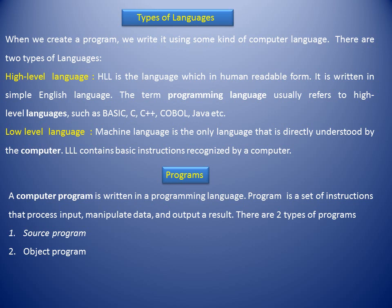A program written by a programmer in C++ or any other language is called a source program. If we take the example of C++, it will have a .cpp extension. When this program is translated into an object program or machine code, the extension given to that program is .obj. So .cpp refers to the C++ source file and .obj refers to the object program file. The language we use to write instructions is called a programming language, and the person who writes this program is known as a programmer.